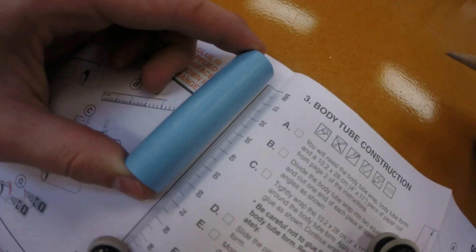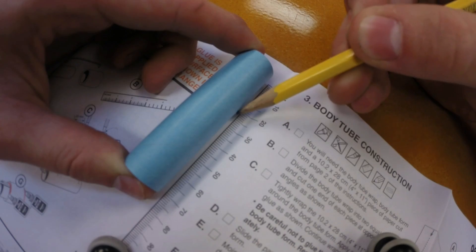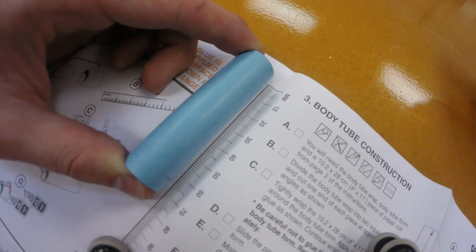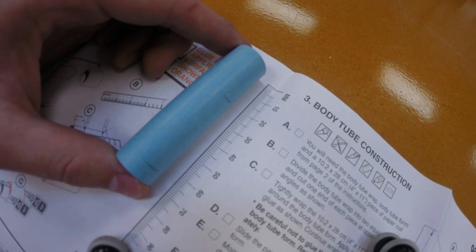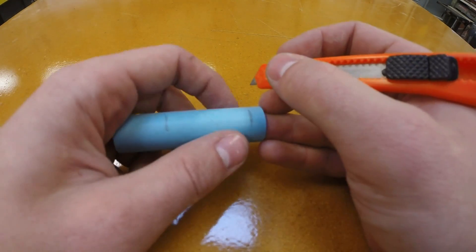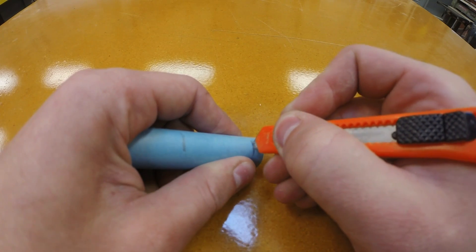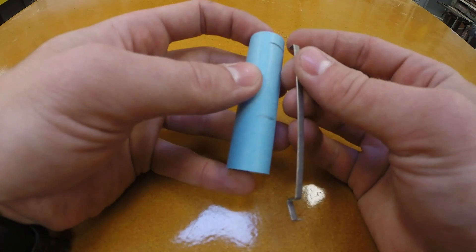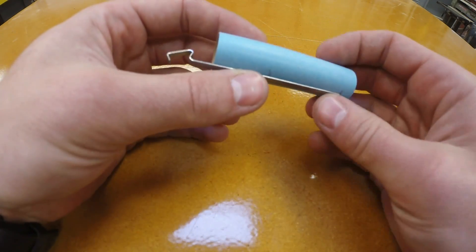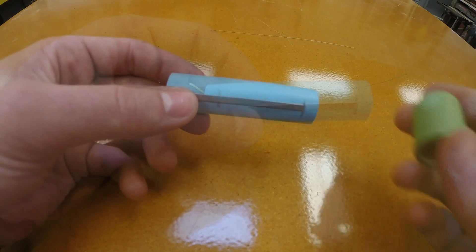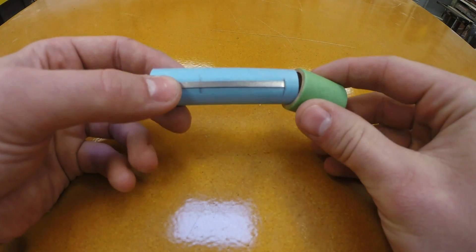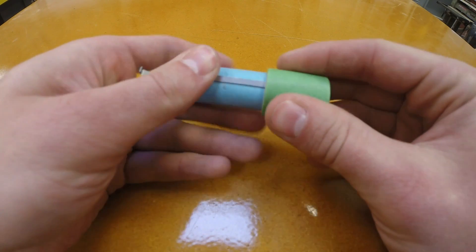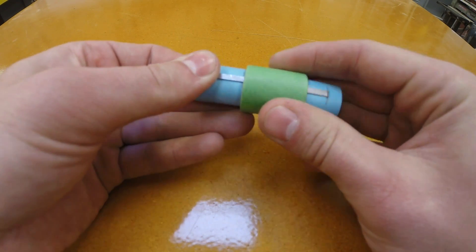Start by holding the blue engine tube up to the ruler marked in your instructions. You're going to make a pencil mark at 25 millimeters and another at 64 millimeters. Next use a hobby knife to make a really small little cut on the 64 millimeter mark. Be careful never to cut toward yourself because those hobby knives are sharp. Next you're going to put the engine hook into the slot that you just made and then slide the green adapter tube over that assembly all the way down to the 25 millimeter mark that you made.